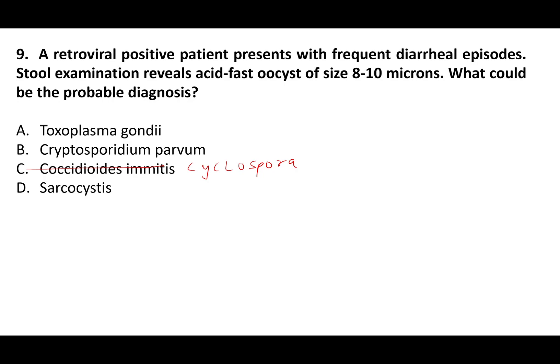Question: An HIV-positive patient presents with frequent diarrhea; stool examination reveals acid-fast oocysts of size 8–10 microns. Probable diagnosis? It cannot be Cryptosporidium parvum (4–6 microns). The 8–10 micron size corresponds to Cyclospora cayetanensis. All these coccidian oocysts are acid-fast and pink in color. Answer: option C — Cyclospora.